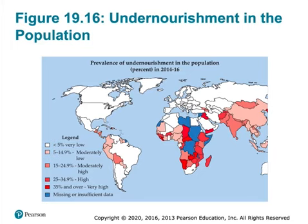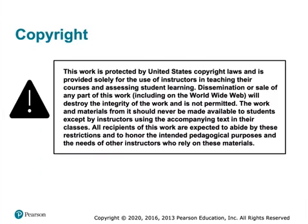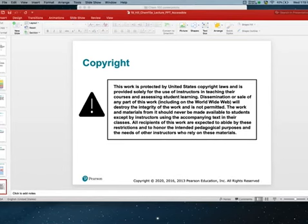Here is the undernourished population shown on a map — it tends not to be in North America or Europe, but more in emerging economies, particularly in Africa and that region, with a little in China and India. Hopefully you've learned more about how crops work, and we're going to end this video right now.